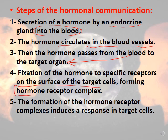The binding of the hormone to its receptor on the target organ forms what is known as the hormone-receptor complex. The formation of this complex then induces a specific response in the target cells. To summarize: the endocrine gland secretes the hormone into the blood → the hormone circulates → it passes to the target organ → it fixes to receptors forming the hormone-receptor complex → a response is induced in the target cell.